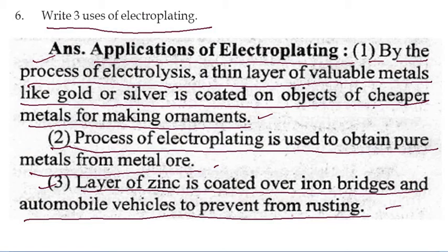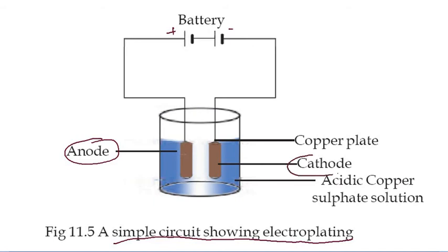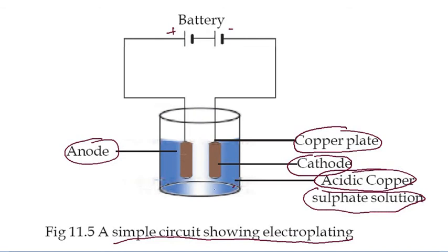Zinc is coated over iron so that iron does not rust. This shows a simple circuit for electroplating: the anode is connected to the positive terminal and the cathode is connected to the negative terminal. The cathode is the copper plate and the solution inside is acidified copper sulphate solution (the blue-colored liquid), and when electricity is passed, metal gets deposited on it.